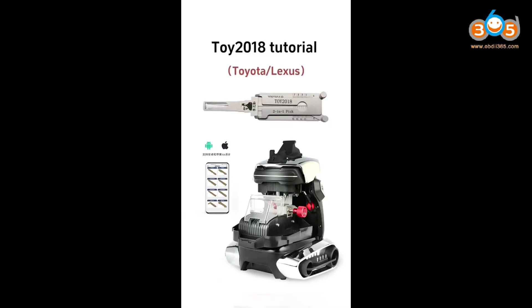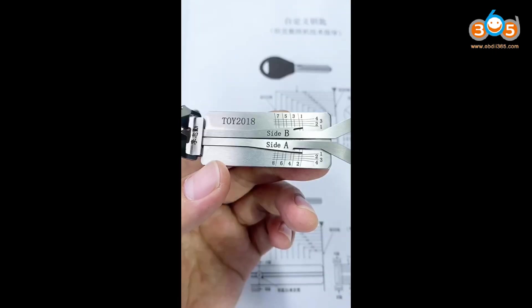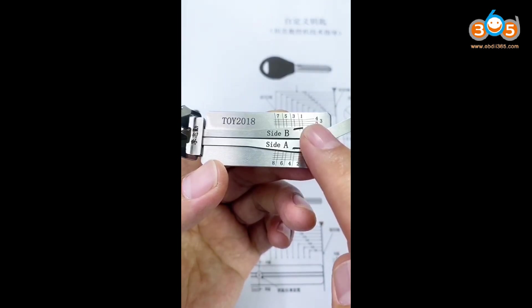It's Lishi TOY 2018 tutorial. Lifter A is down, B is up.